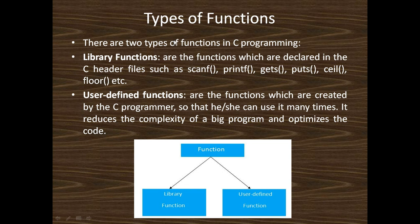Now I describe the types of functions. There are two types of functions in C programming. One is library functions and the second is user-defined functions. Library functions are developed by developers, and we find library functions in header files. User-defined functions are the functions which are implemented by users.